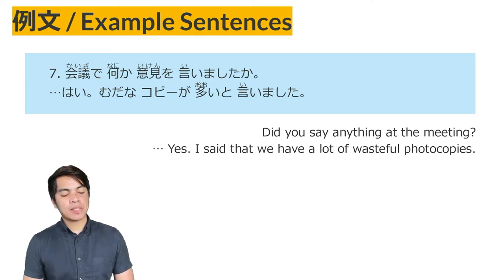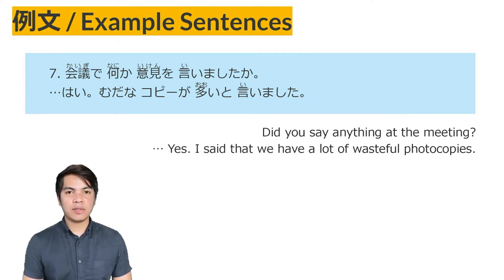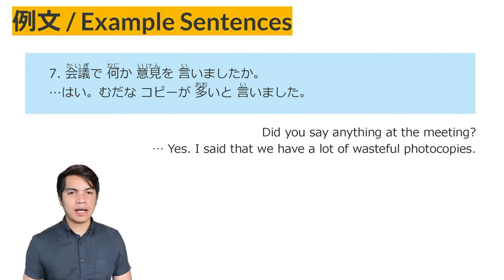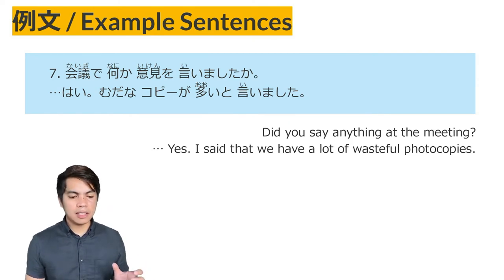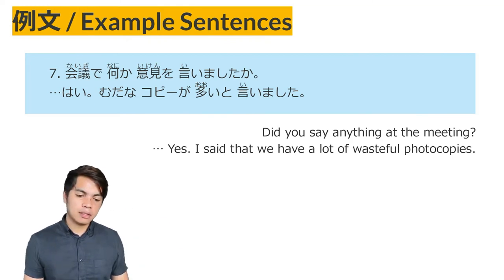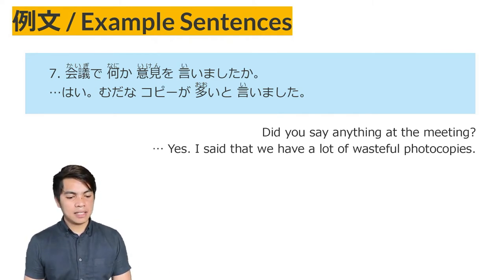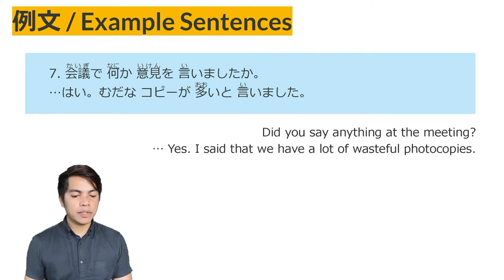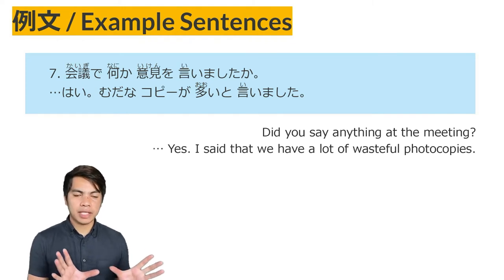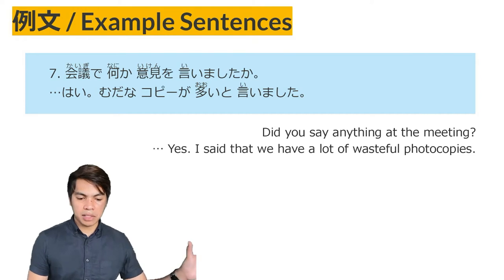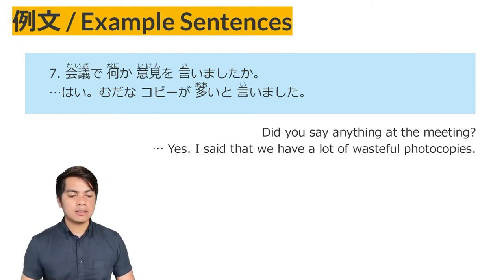Example sentence No. 7: 'Kaigi de nanika iken wo iimashita ka?' — Did you express any ideas or opinions at the meeting? Kaigi with particle de because you did something at the meeting. Nanika iken — some opinion or ideas. He said 'Hai, muda na kopii ga ooi to iimashita.' He said there are lots of unnecessary photocopies. Muda na kopii ga ooi is the sentence he said, to iimashita.